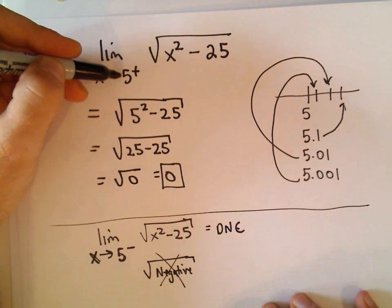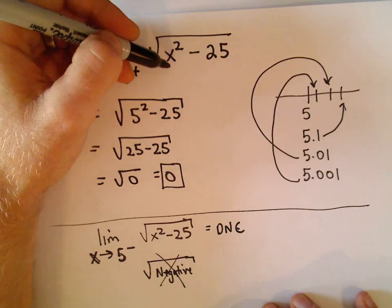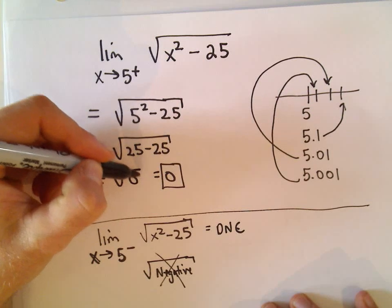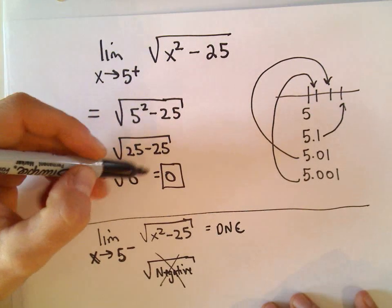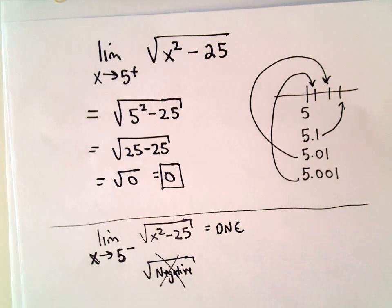So again here if I take something bigger than 5 it's going to be bigger than 25 after I square it. Well if I subtract 25 I'm basically going to get something close to 0 but a little bit bigger than 0. But again if you take the square root of that number it's going to get arbitrarily close to 0.